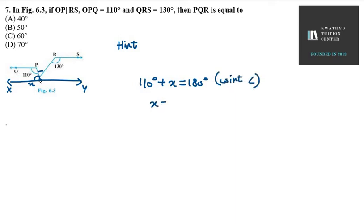These are co-interior angles. So you will get the value of x as 180 minus 110. So this will be 70 degrees.